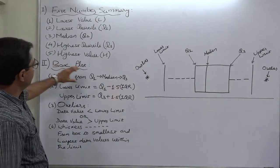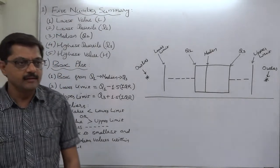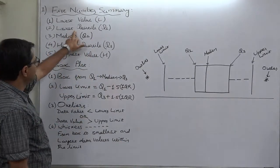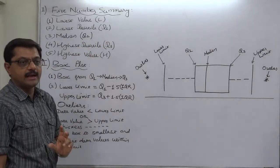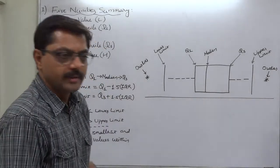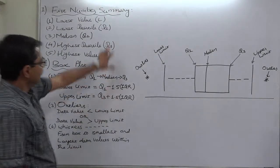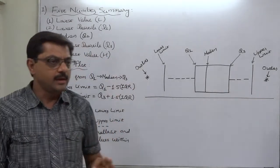Out of these five, lowest data value and the highest data value are readily available from the data in the ascending order. But these three—lowest quartile Q1, median Q2, and highest quartile Q3—we have to determine according to the method we have already discussed in the previous session. A list of all these five is five-number summary.